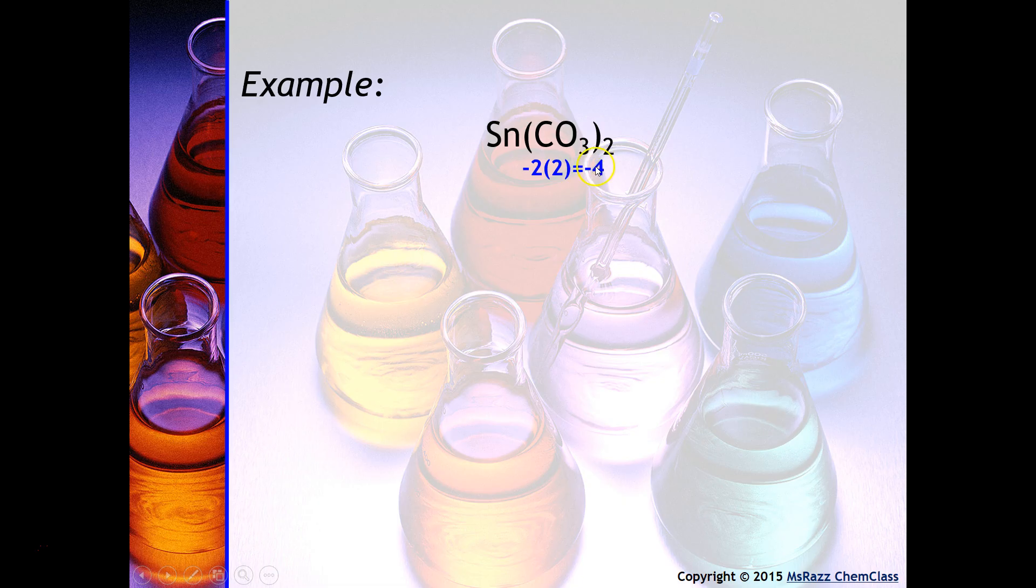If this side of the compound is minus four, that means that this side of the compound has to be positive four. I don't have to do any division here because notice there's only one tin. So that positive four tells us that that is the charge on the tin, and therefore it will be tin four carbonate.